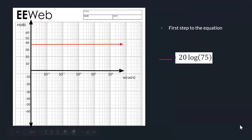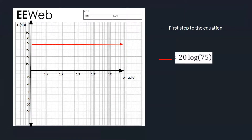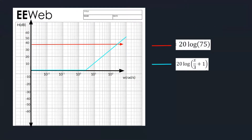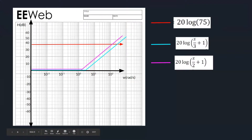The first step in plotting the Bode plot is to plot each separate part of the transfer function. The first part, 20 log of 75, is a constant at 37.5 dB and is plotted as a flat line across the whole Bode plot. The second line, 20 log of (s/3 + 1), is 0 until frequency 3, then rises 20 dB per decade. The third line, 20 log of (s/2 + 1), is 0 until frequency 2, then rises 20 dB per decade.